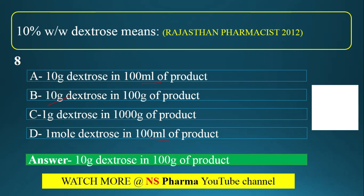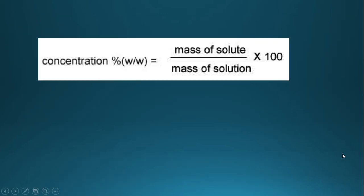The formula is: concentration percentage w/w = (mass of solute in grams / mass of solution in grams) × 100. So 10% w/w means 10 grams in 100 grams of product.